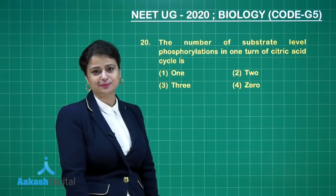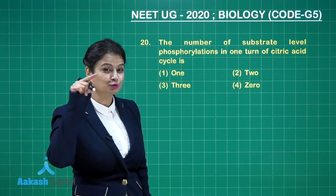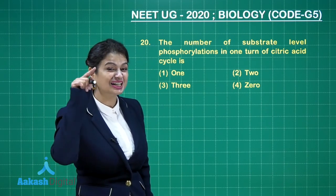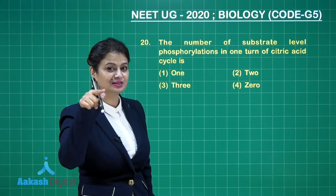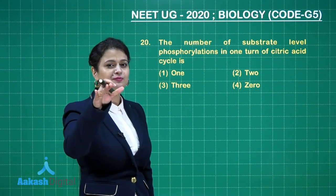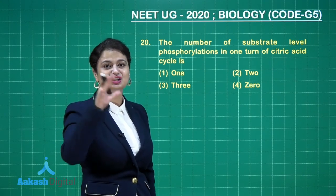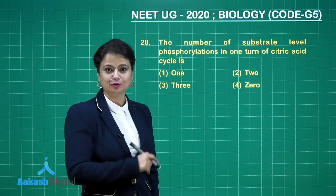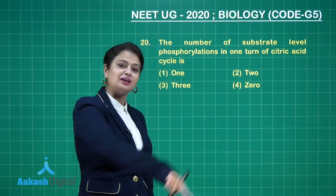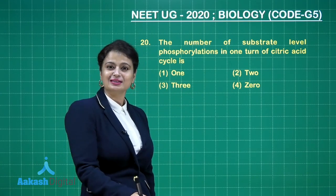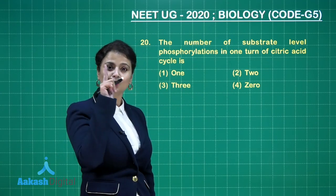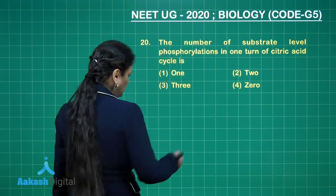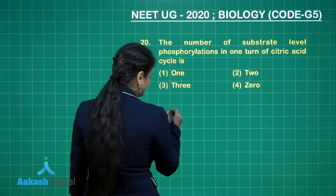At the seventh step — I used to call it the 'James Bond step' — there is formation of direct GTP. So at the seventh step, in one turn of the citric acid cycle, only one substrate-level phosphorylation occurs.